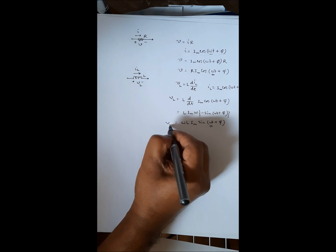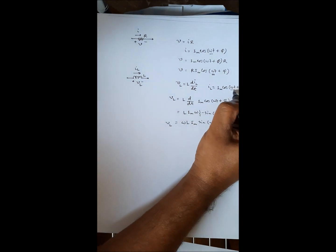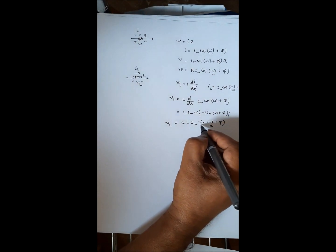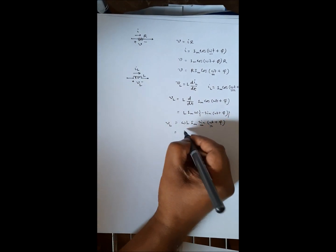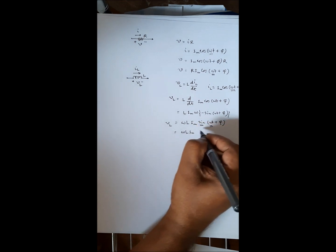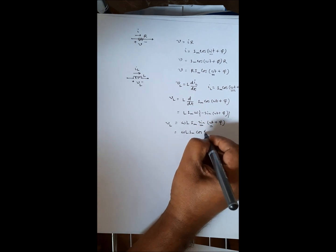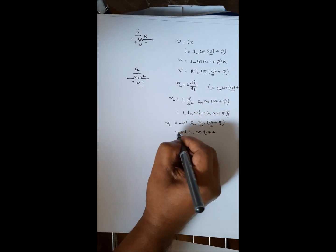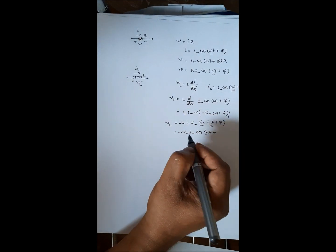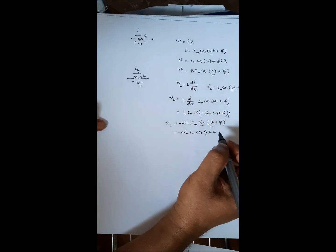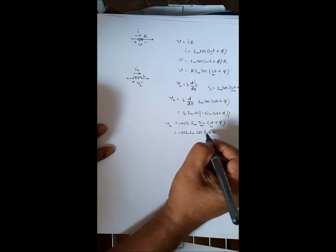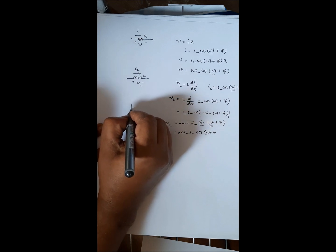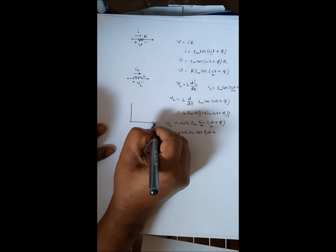Here also you see the frequency ω for the voltage is the same frequency as the current. The only difference is the phase angle — the voltage is a sine function rather than cosine. We can represent this in terms of cosine as ω·L·I_m·cos(ωt + φ + 90°). To convert, I use a diagram we learned earlier to express sine in terms of cosine.